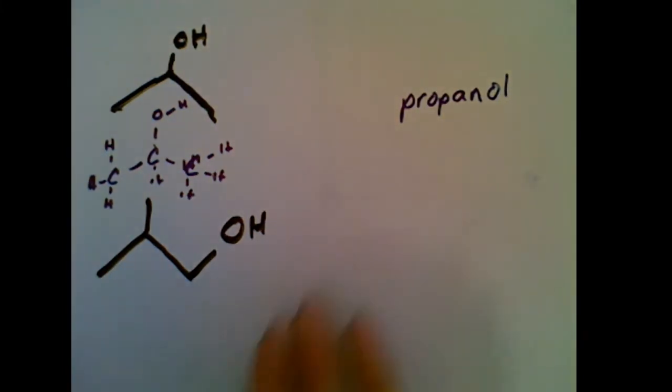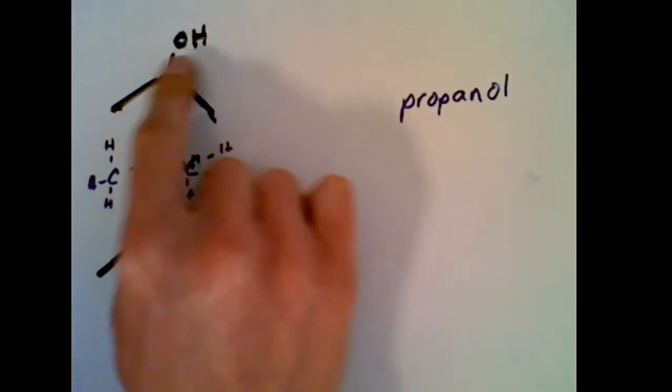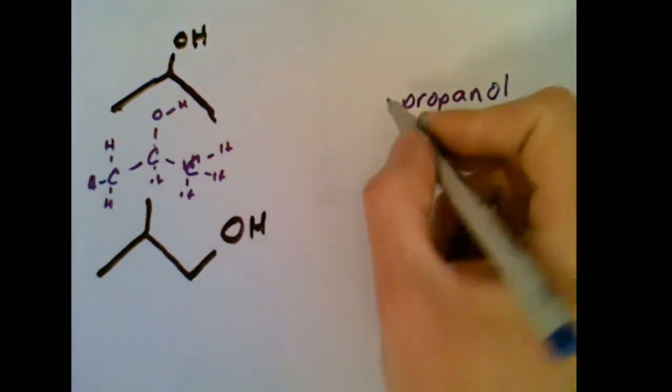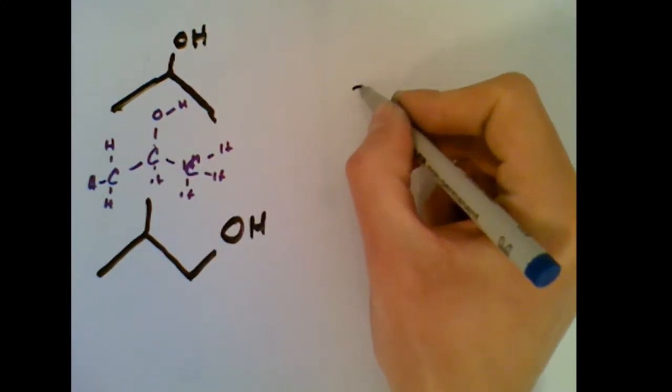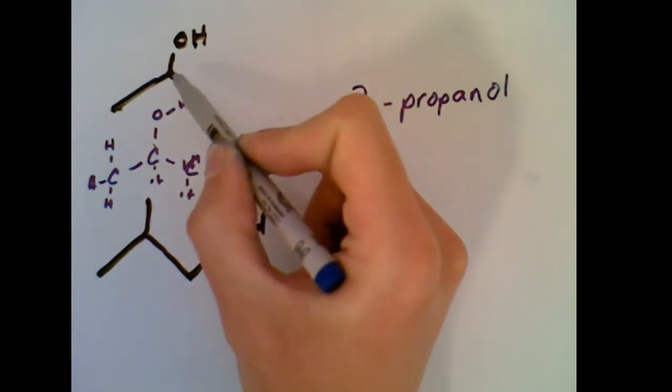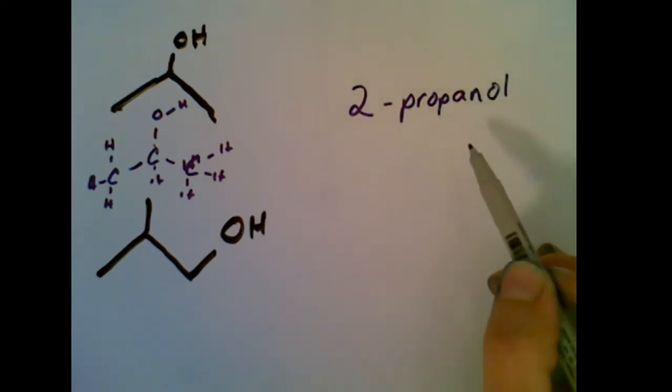So now that we know we have an alcohol and it is three carbons, we need to number this that we get the OH with the lowest possible number. And it doesn't matter which way you do that. It's going to be in the position number two, whether I go one, two, three, or one, two, three. And this becomes two propanol.